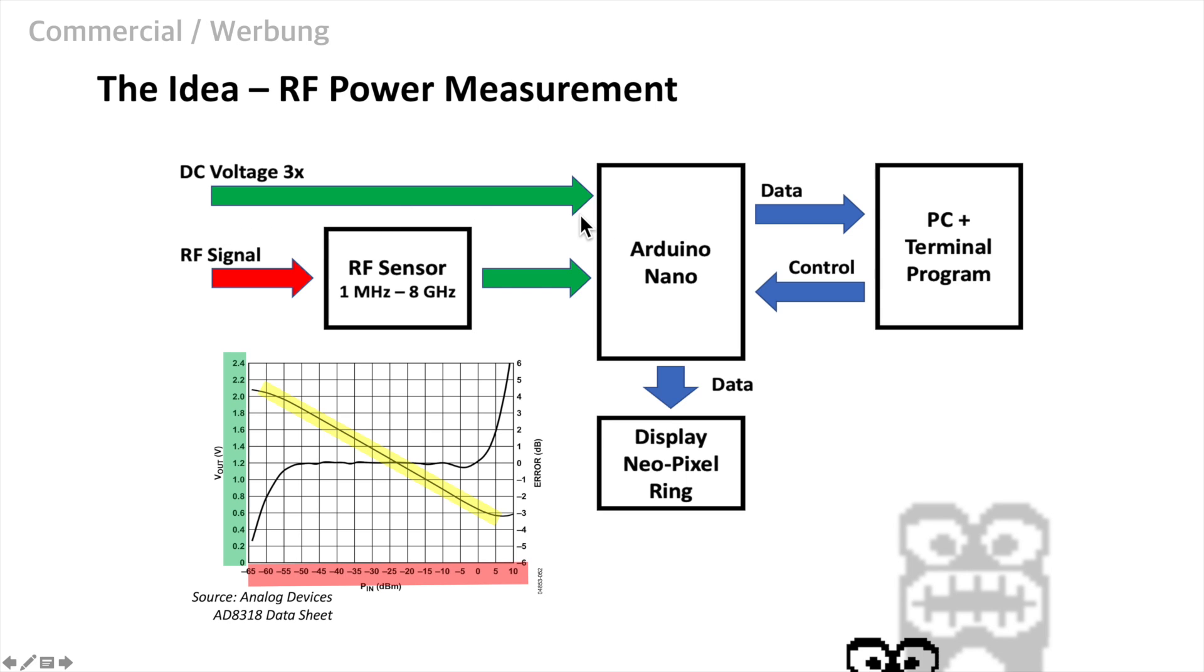Furthermore, the Arduino controls a NeoPixel ring to display the measured values. And finally it realizes a serial interface to a PC where the values can be recorded with a terminal program. And through the same serial interface we can also control the parameters for our data logging functions.